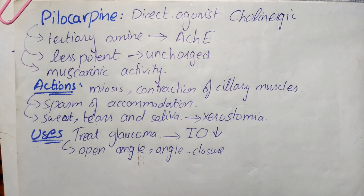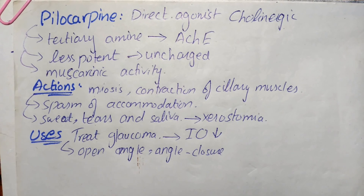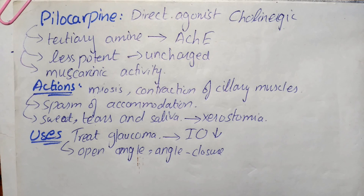Hello everyone. In today's video we are going to be talking about the agent called pilocarpine. Pilocarpine is a direct acting cholinergic receptor agonist, which means it directly binds to cholinergic receptors and thereby increases the activity of acetylcholine present in the body.